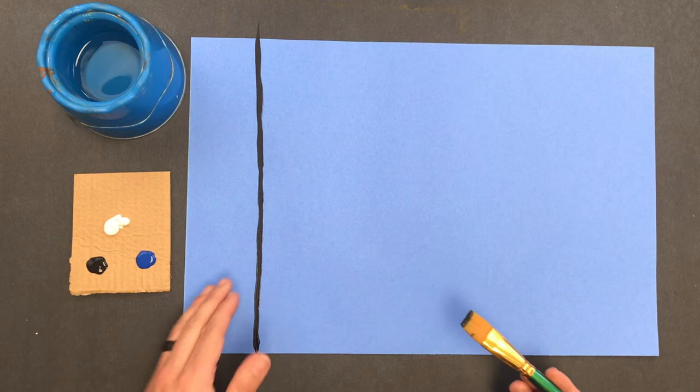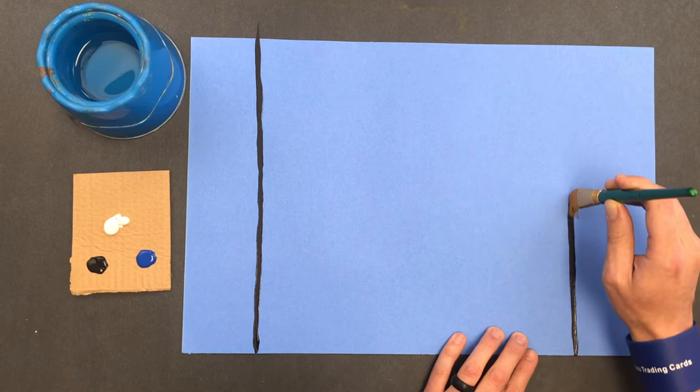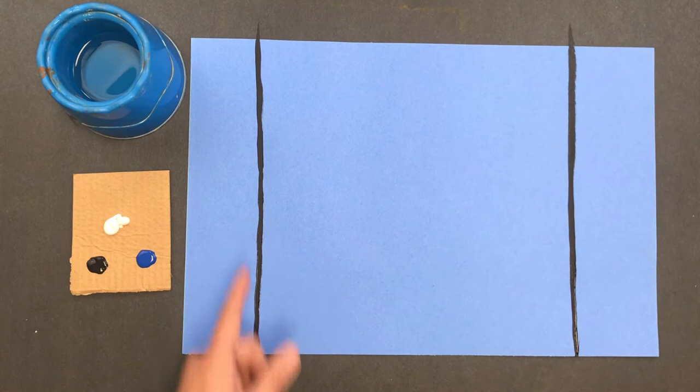So now that I've started using black, let's use black again. I'm going to dip it in my black paint and I'm going to give the same line that I just did on the other side. Dragging it up nice and smoothly all the way up the paper. Okay, so now I have one and two lines.